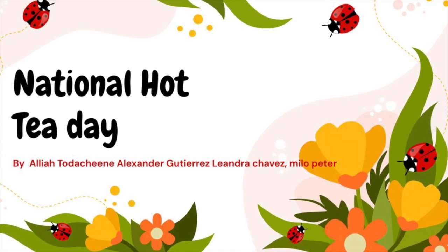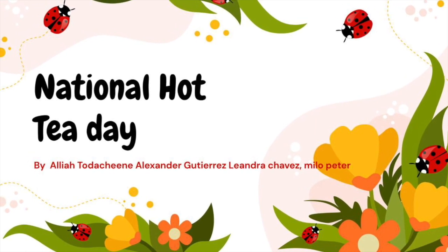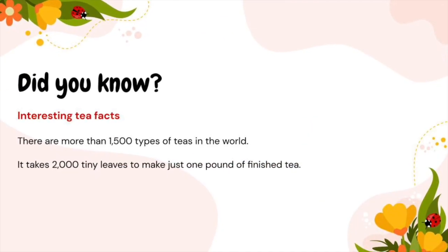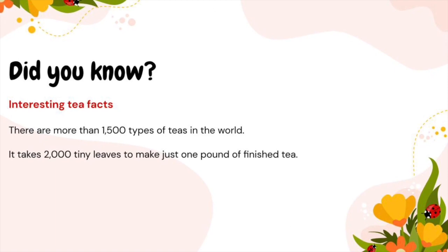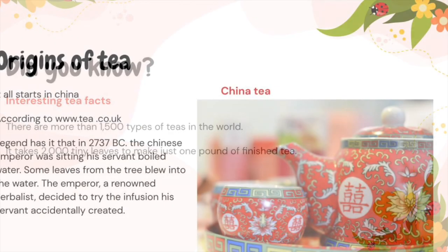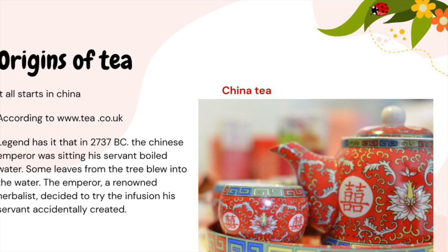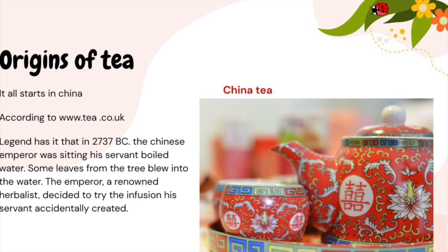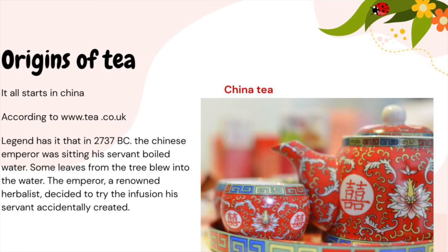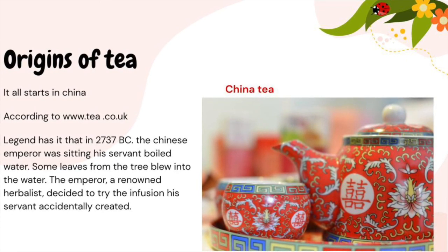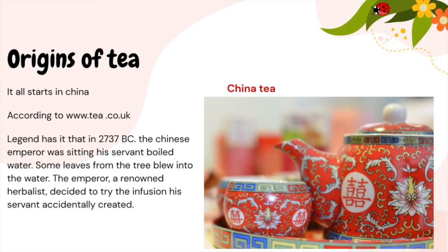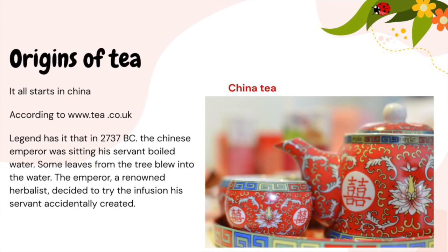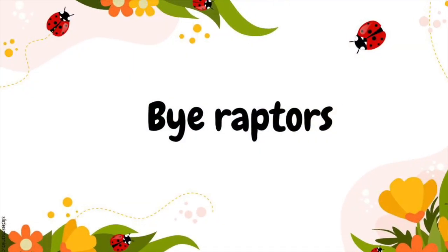National Hot Tea Day by Laya Tocini, Accentico Diaz, Leandra Travis, and Milo Peter. Did you know these interesting tea facts? There are more than 1,500 types of teas in the world, and it takes 2,000 tiny leaves to make just one pound of finished tea. Origins of tea: according to www.tea.co.uk, legend has it that in 2737 BC, the Chinese emperor was sitting with his servant near boiling water when some leaves from a tree blew into the water. The emperor, a renowned herbalist, decided to try the infusion his servant accidentally created. What's your favorite type of tea? Boba. Do you make it or buy it? I buy tea. Bye, Raptors.